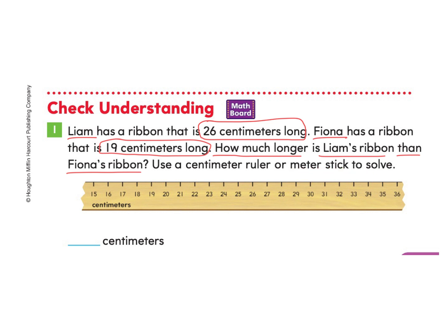You may want to pause and try this part on your own, or you can follow along with me. Let's review this word problem. First, we know that, excuse me, Liam's ribbon is 26 meters. And then we see that Fiona's is 19 centimeters. So what we're trying to find out is how much longer Liam's ribbon is. Because we know his is the largest because it's the bigger number. We have 26 and we have 19. We know that 26 is bigger.